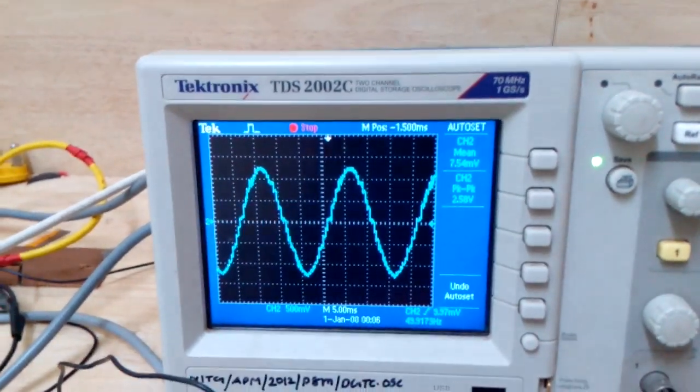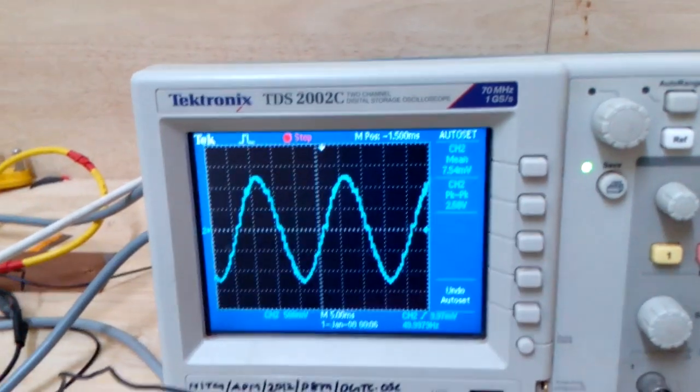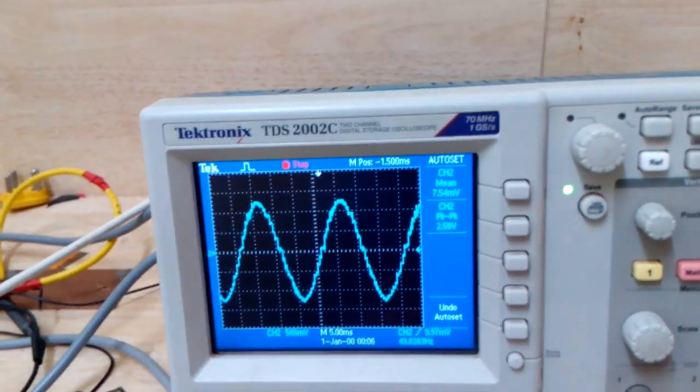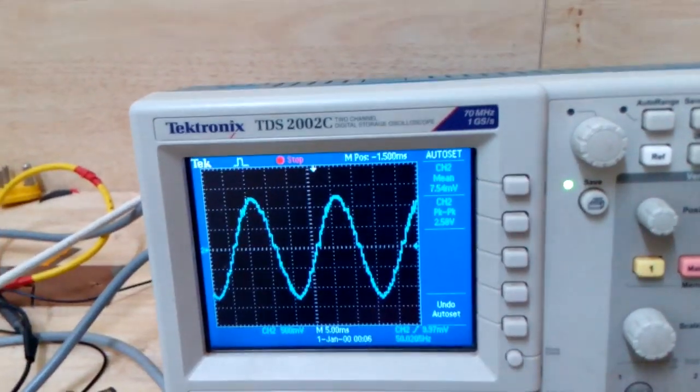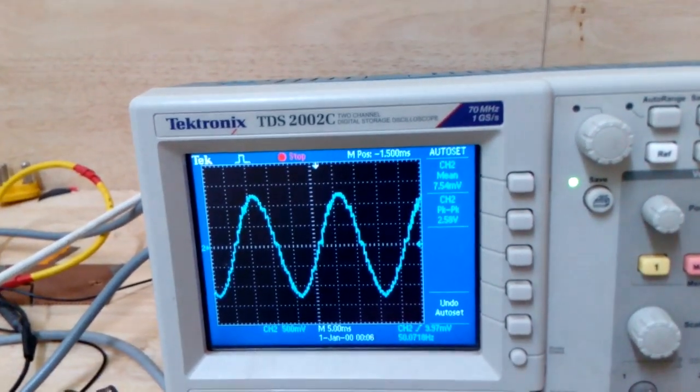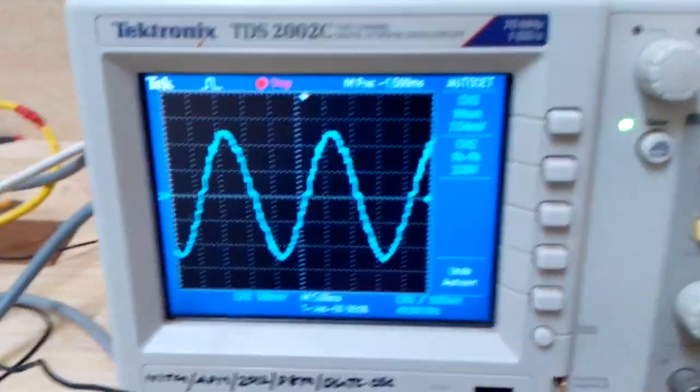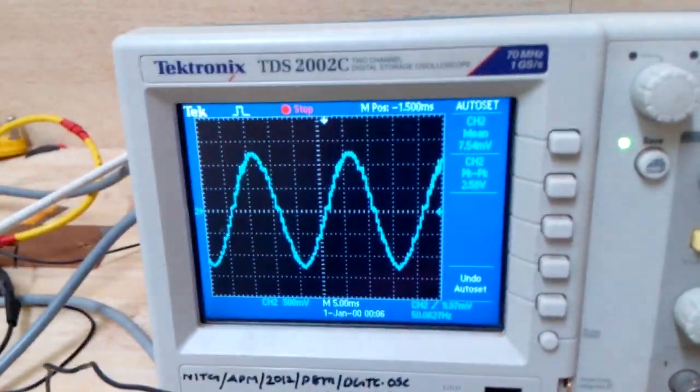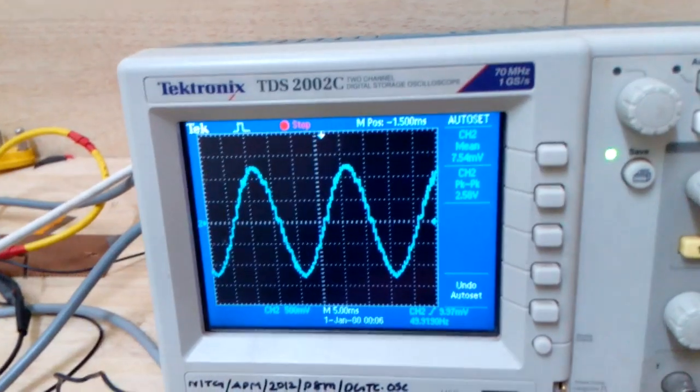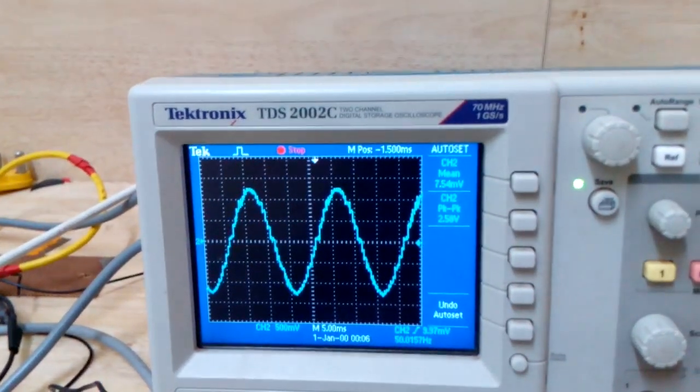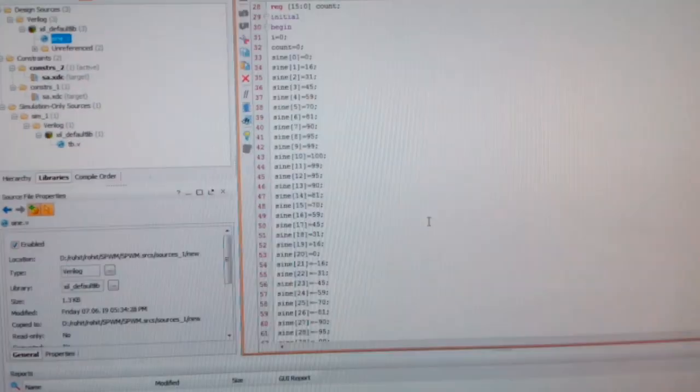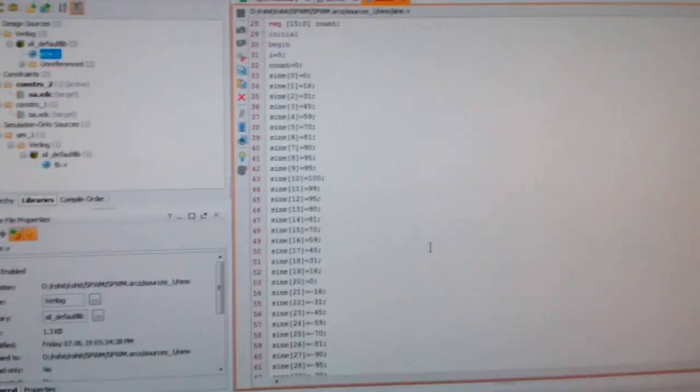We are going to implement using a digital controller, and these digital values, using the R2R ladder, we are converting these digital values into analog output. So how we are going to do this process to implement these - for this I wrote code in Vivado Xilinx software.